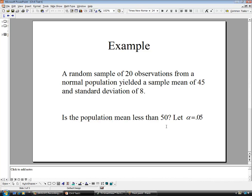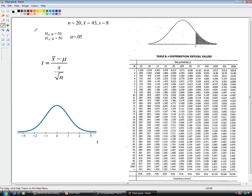We're testing whether it's less than 50. So the null hypothesis is that the mean equals 50. The alternative is that the mean is less than 50. There's our alpha and there's all of our summary information. 20 observations, a mean of 45, a standard deviation of 8.